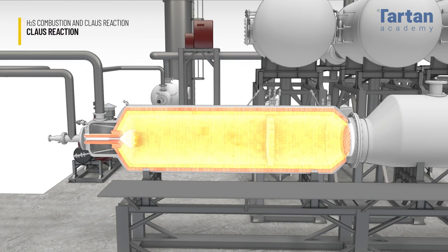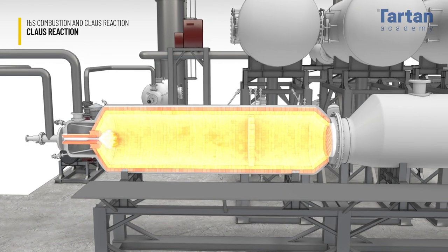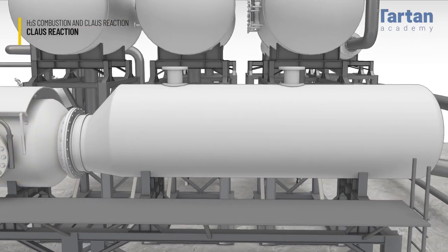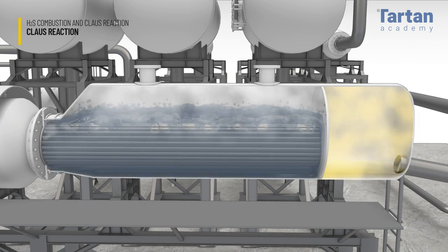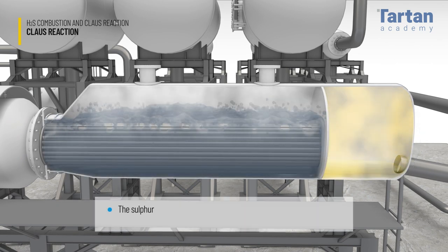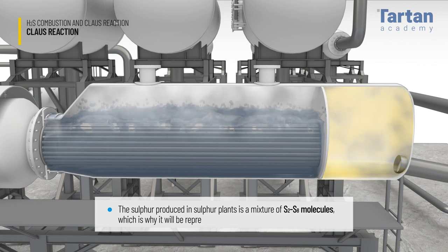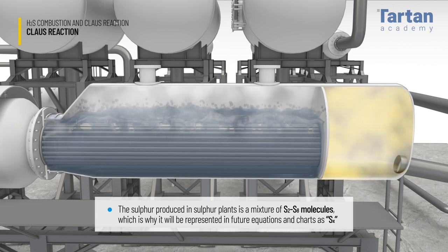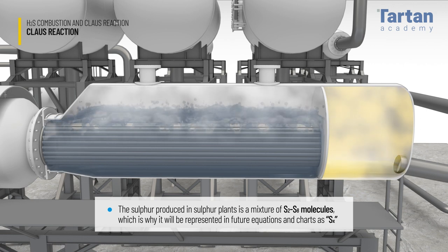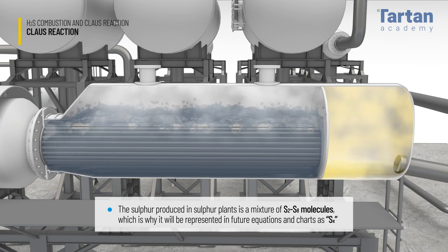In the thermal reactor, after oxygen is used to combust one-third of the H2S to SO2, this H2S and SO2 will then react to produce equilibrium levels of sulfur and water. The sulfur produced in sulfur plants is a mixture of S2 to S8 molecules, which is why it will be represented in future equations and charts as Sx.